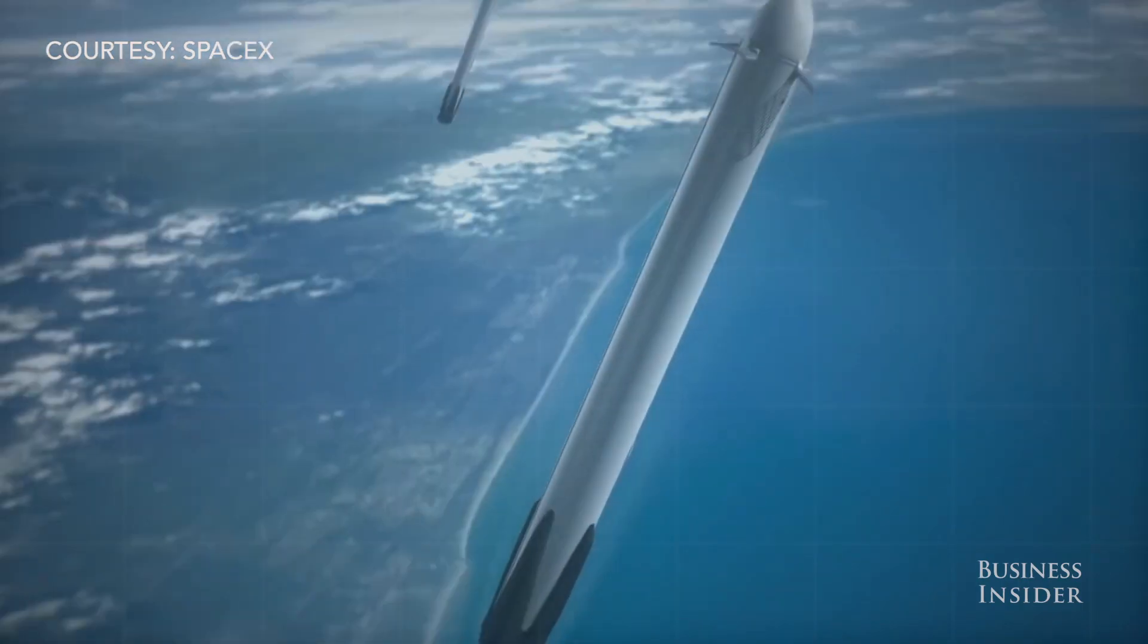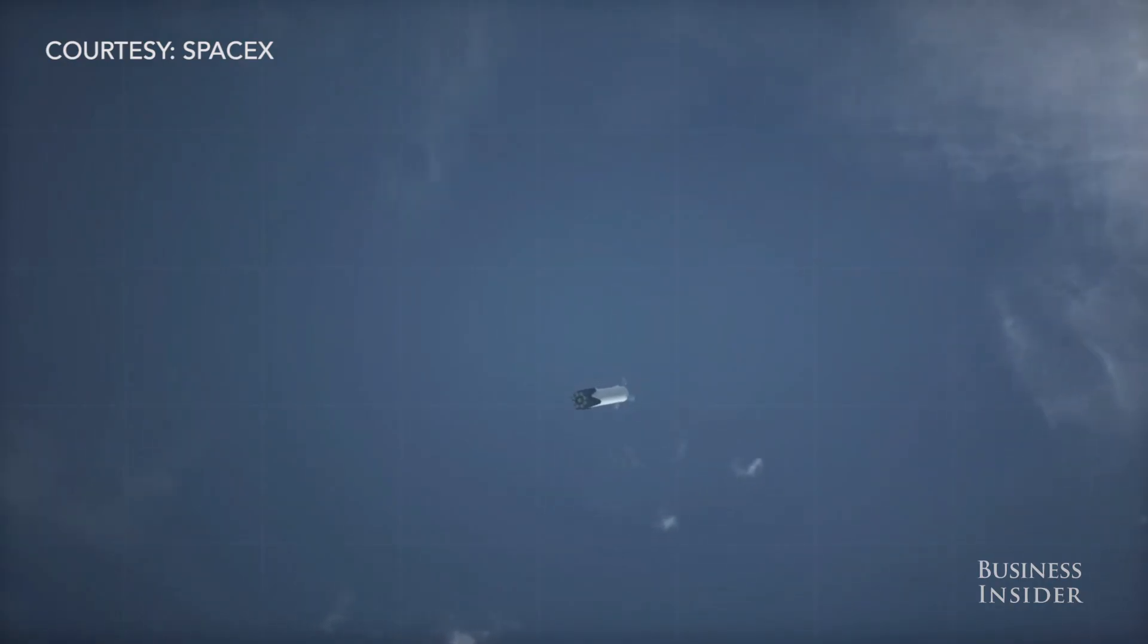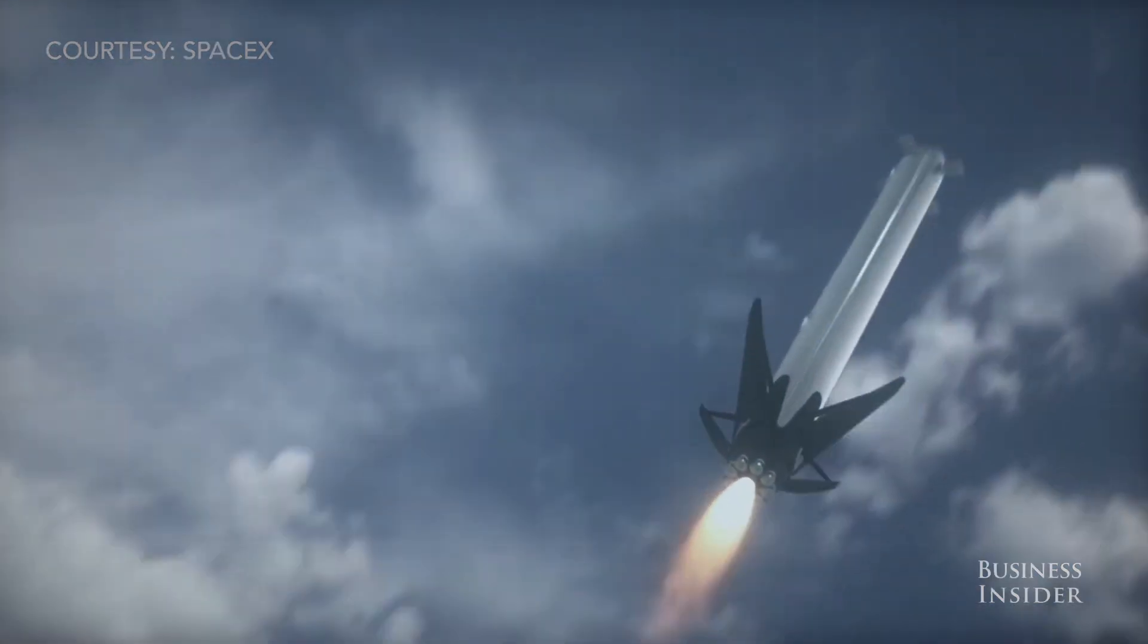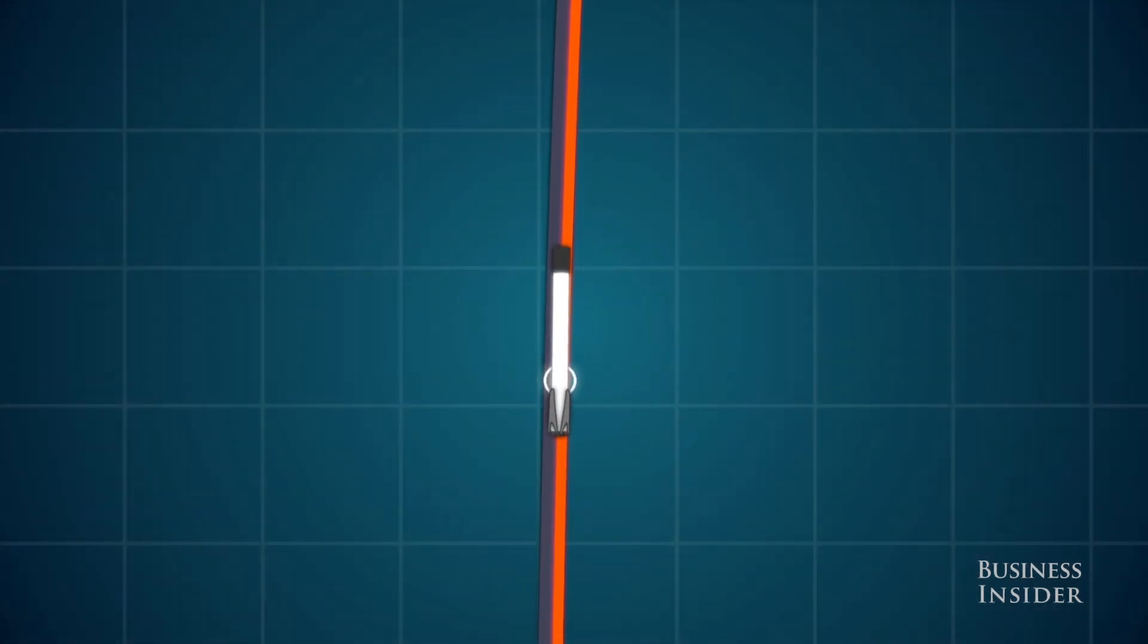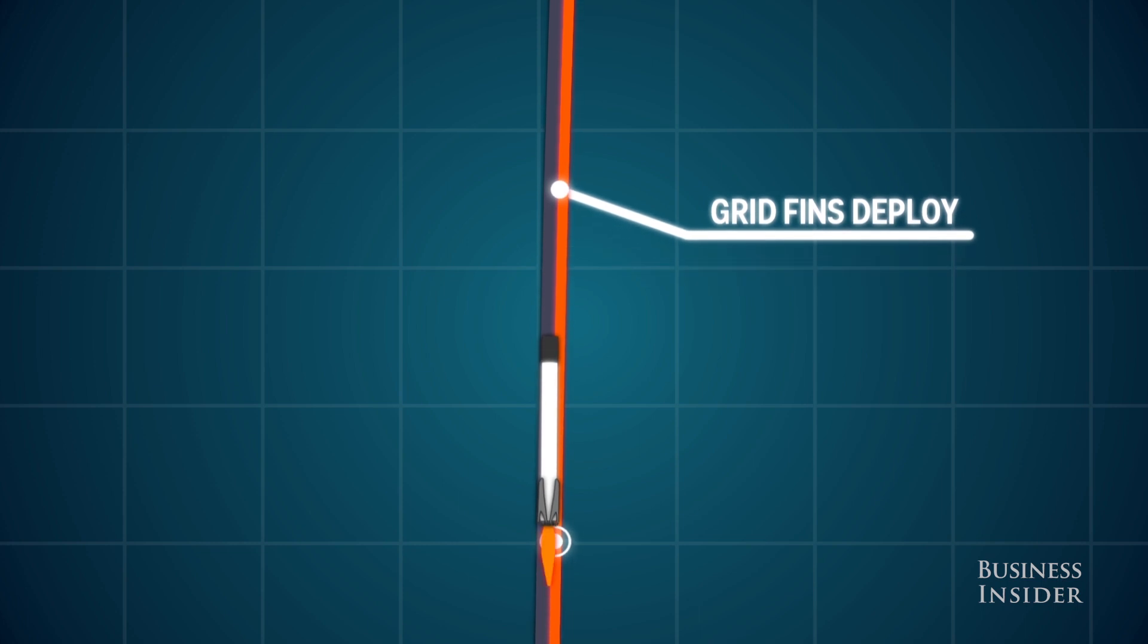Then, a couple of minutes later, it deploys a unique display of four fins located near the top. These fins, which may look out of place since no other rocket in history has such a thing, help keep the rocket on course and angled upright.